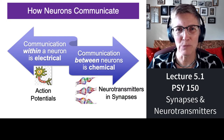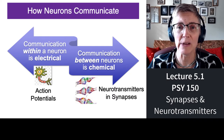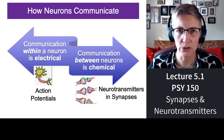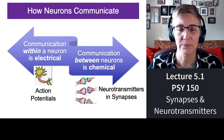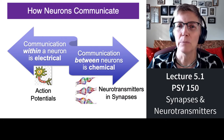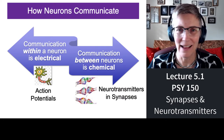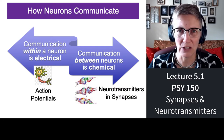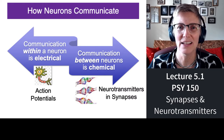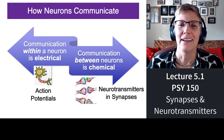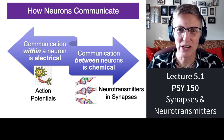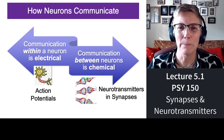The action potential is an electrical signal, so information within neurons is communicated electrically. Between neurons, it's not electrical — it's chemical. So synapses are where communication happens by way of chemicals.